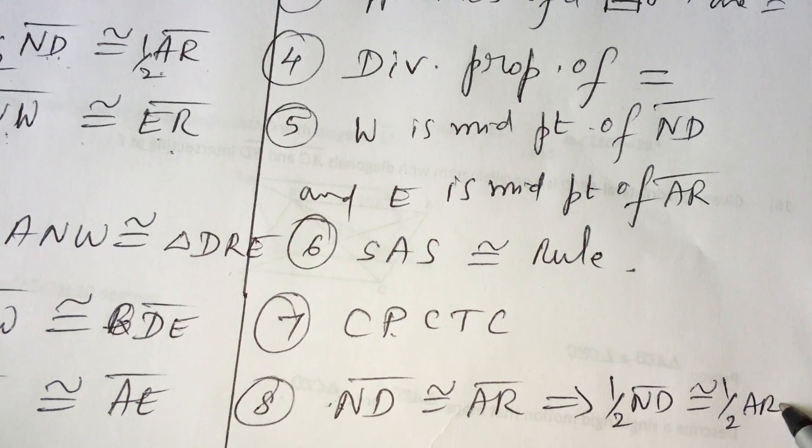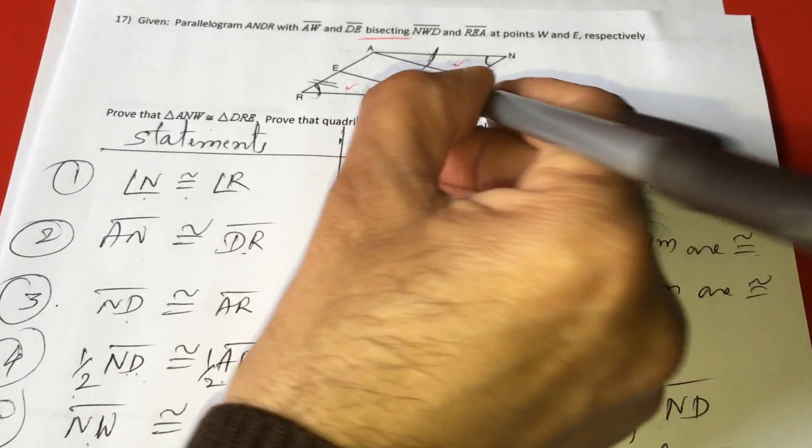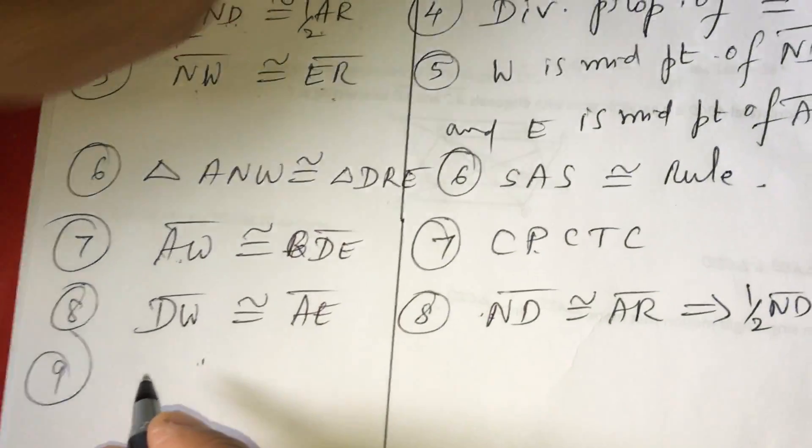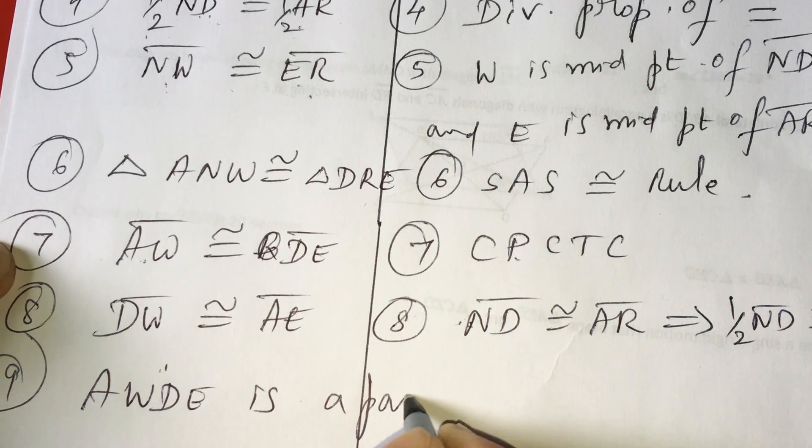Since the reason is ND is congruent to AR, which implies half of ND is congruent to half of AR due to this reason, we can say this. Now I have proved this side AW is congruent to this one, and this one is congruent to this opposite side.